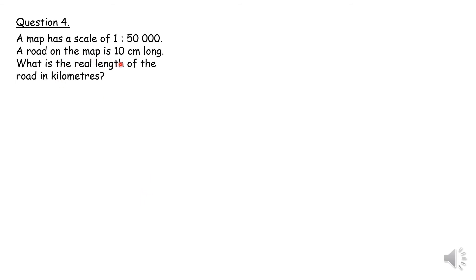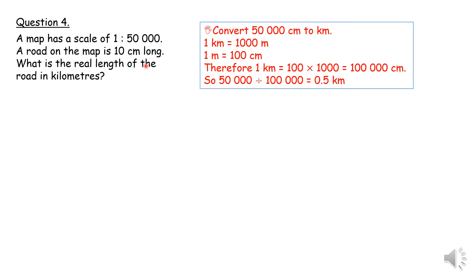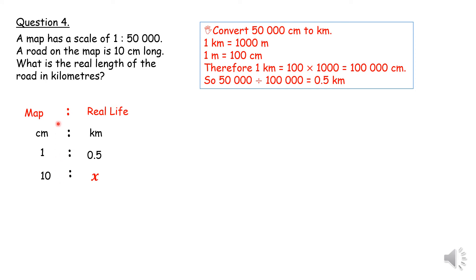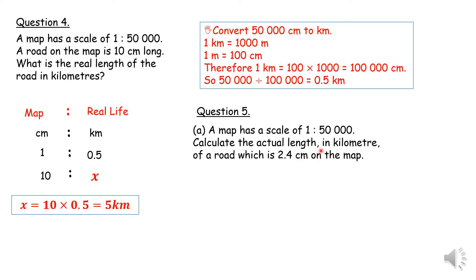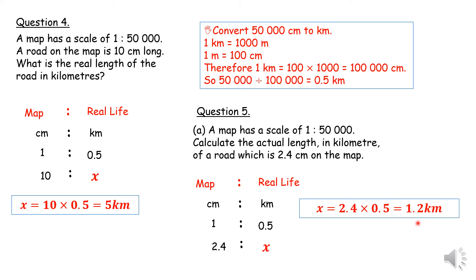A map has a scale of 1 is to 50,000. That means 1 centimeter equals 50,000 centimeters in real life. Since the question wants the answer in kilometers, I change 50,000 centimeters to kilometers. My new scale becomes centimeters to kilometers. I put my 10 centimeters under the map column and do cross multiplication. I get my answer already in kilometers, which is 5 kilometers. Question 5 is very similar with the same scale. I bring down 2.4 centimeters under the map and cross multiply to get 1.2 kilometers.